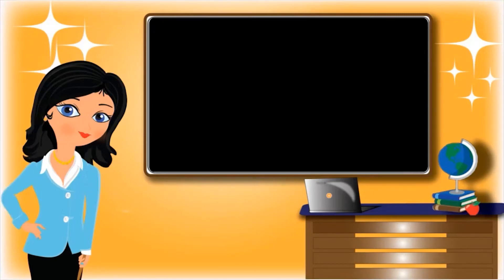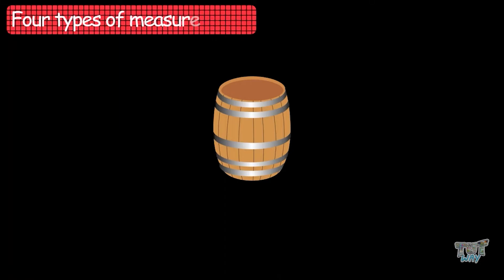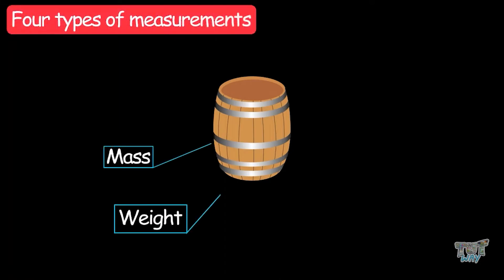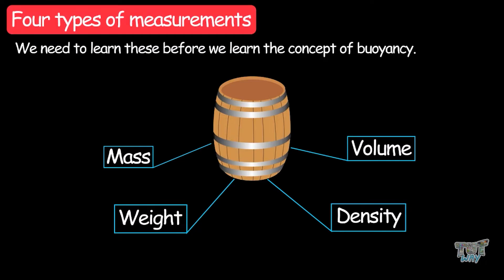Hi friends! Today we will learn about weight, mass, volume, and density and their relationship. So let's start. For every object we have four types of measurements: mass, weight, volume, and density. And we need to learn these before we learn the concept of buoyancy.